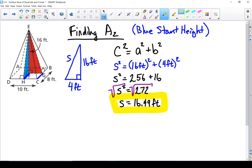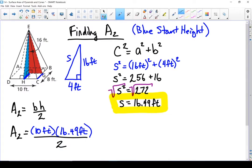I can use that now to find area 2. I've got enough information to solve for the area of that triangle. Put in what we know. When I do 10 times 16.49 and then divide the answer by 2, the area of that triangle is 82.45 square feet.